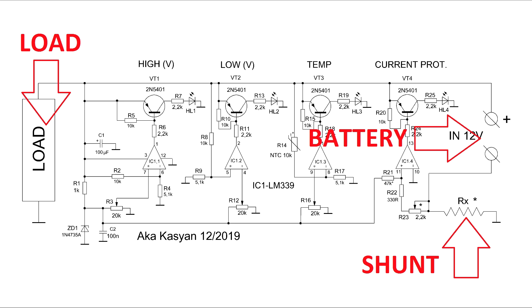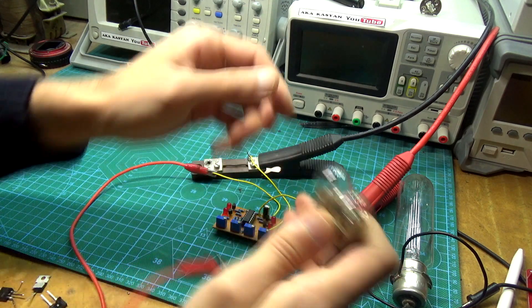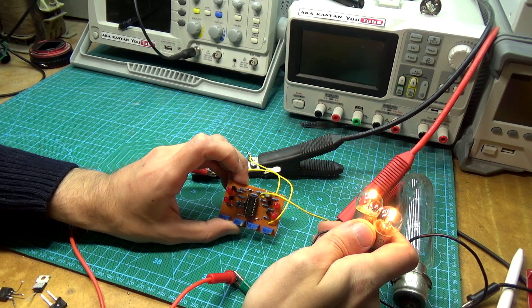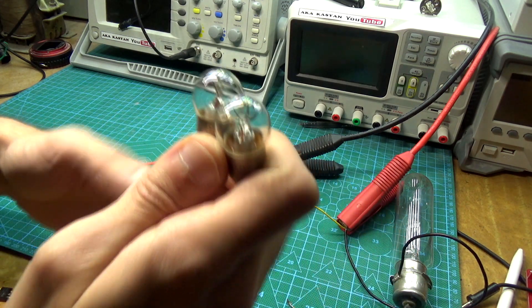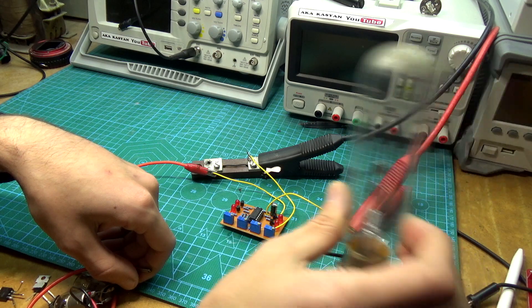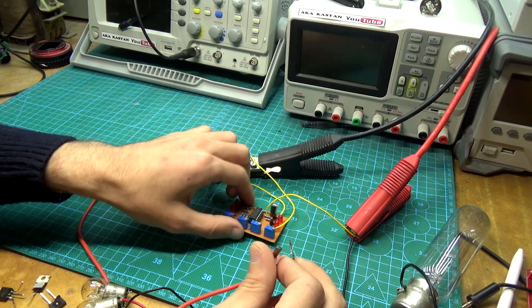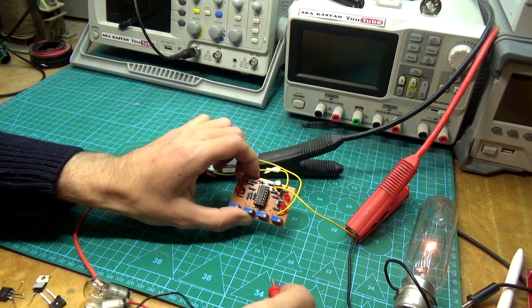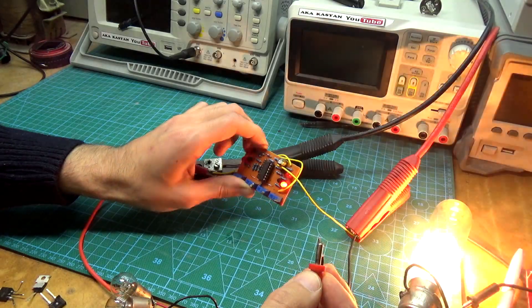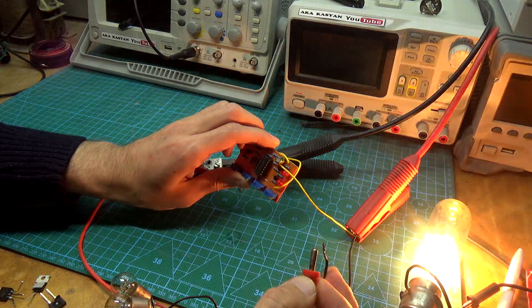Next, connect everything as shown. We increase the load until a current in the circuit becomes equal to value at which the protection must operate. The current is controlled by an additional ammeter or by measuring the voltage drop across the shunt and then, according to Ohm's law, you can calculate what current flows in the circuit. The last option in this case is the most convenient. If you have achieved the required current, simply rotate the fourth tuning resistor until the LED turns on.